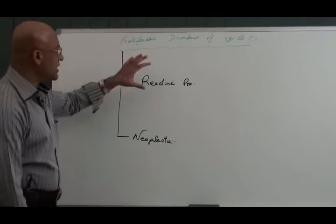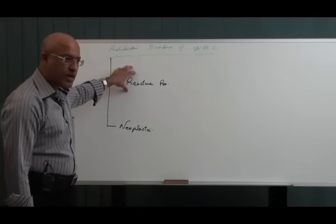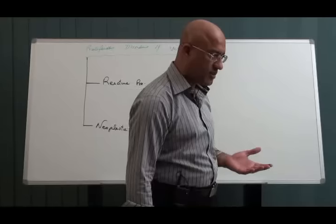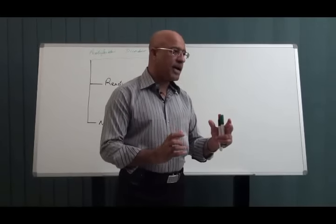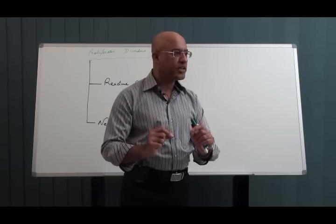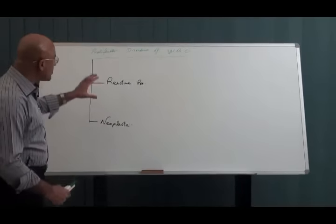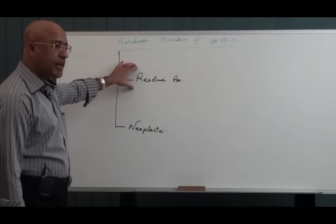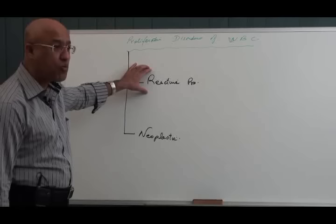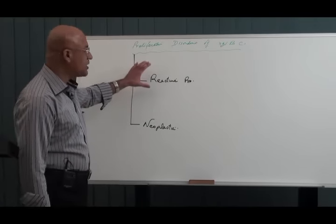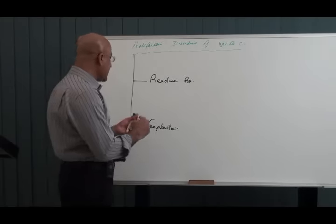Reactive proliferations mean that when in your body there is inflammation or infection and there is a challenge to the immune system, white blood cell numbers usually increase. White cells move from the bone marrow to the peripheral blood in bigger numbers, and even white blood cells sticking with the endothelial lining of blood vessels also jump into circulation. This increase in white blood cells in the peripheral blood in reaction to inflammation, infection, trauma, or stress is called reactive proliferation.